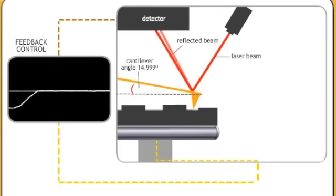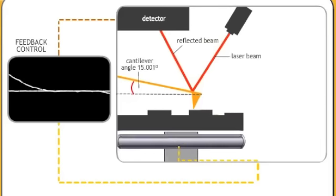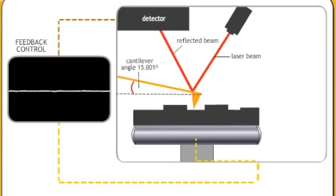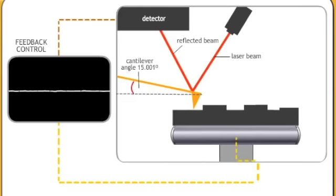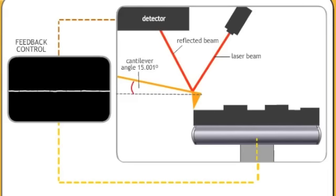The topography image is created from the path of the sample moving up and down while the deflection image is based on the deflection of the tip. The AFM operator adjusts the feedback control to minimize the deflection of the tip, increasing the accuracy of the topography image.